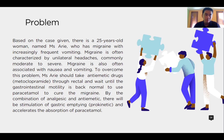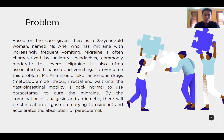Based on the case given, there is a 25-year-old woman named Ms. Ari who has migraine with increasingly frequent vomiting. Migraine is often characterized by unilateral headaches, commonly moderate to severe, and is also often associated with nausea and vomiting. To overcome this problem, Ms. Ari should take anti-emetic drugs, which is metoclopramide, through the rectal route.